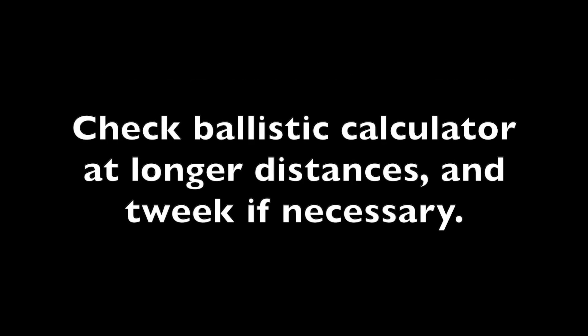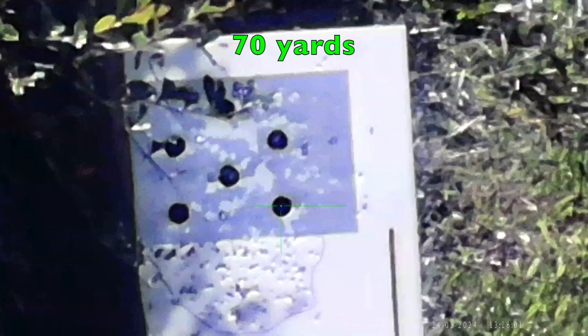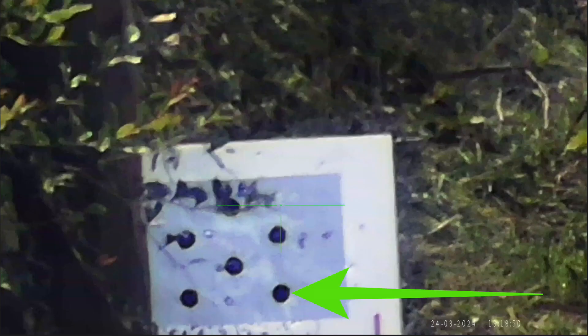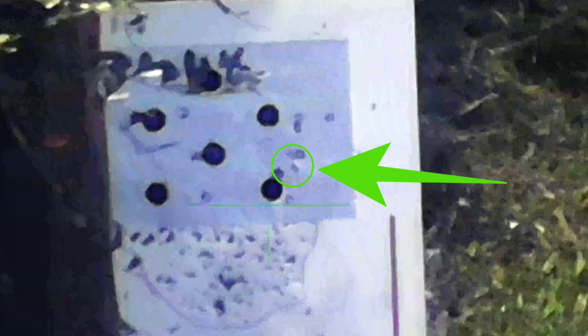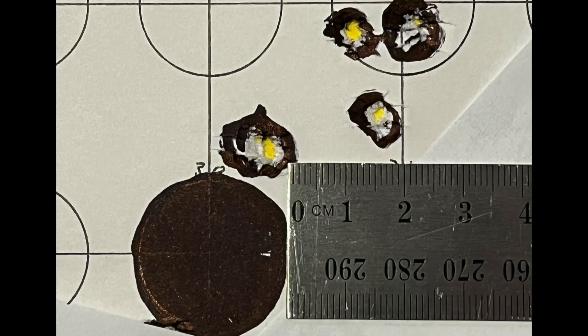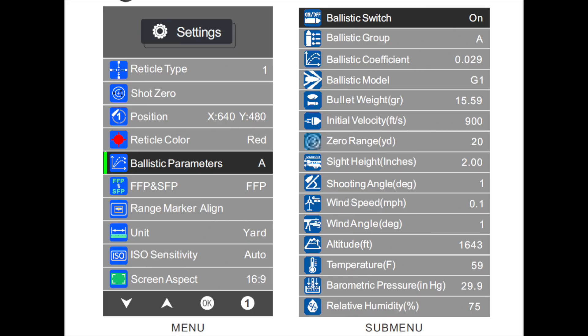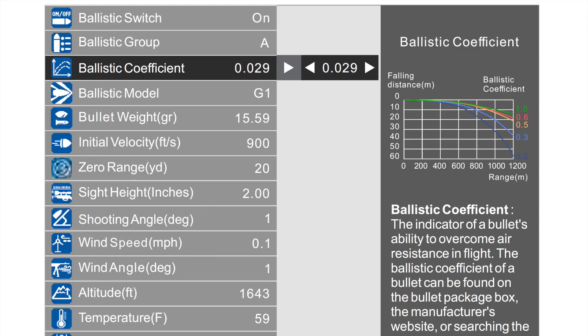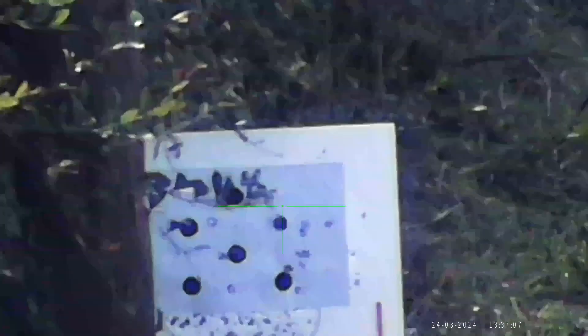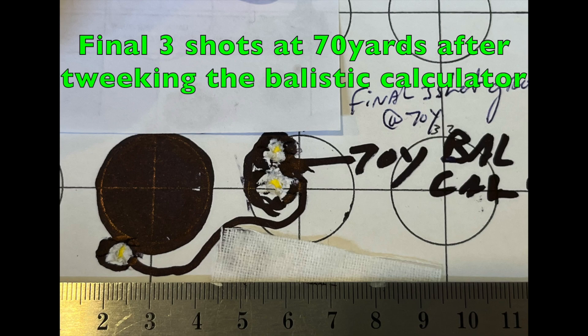The next step is to check the ballistic calculator out at longer distances. I like to check it at least double my zero distance, so I've moved the target back to 70 yards. I will be aiming for this black dot. The ballistic calculator has generated a holdover point here. You can't see it, but I can see it in the scope. The ballistic calculator's generated point of aim was not far off at 70 yards. It was slightly high. To tweak this, I went into the ballistic calculator menu, and slightly adjusted the ballistic coefficient of the pellet. This tells the computer that the pellet is going faster than it actually is, and the computer generates a slightly higher point of aim. I'm not worried about left or right variation. That could be the wind or it could be me, and it can be easily corrected by zeroing the reticle. All I'm concerned with here is the vertical movement up and down, and I'm happy with that at 70 yards.